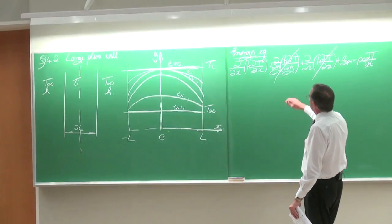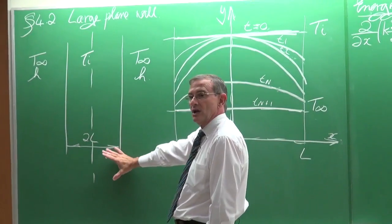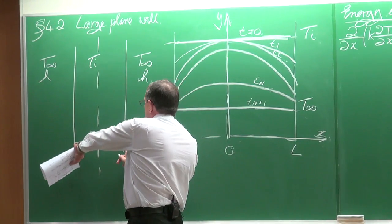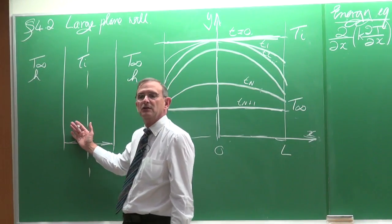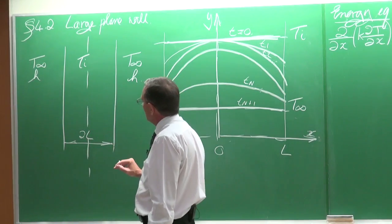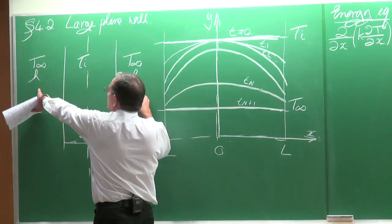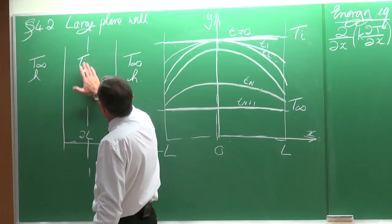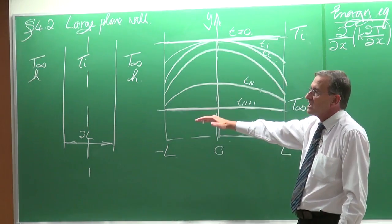What is the methodology used to solve the temperature distribution in a large plane wall? The large plane wall has a symmetrical boundary condition and is always given as 2L. On both sides, we have a heat transfer coefficient and T-infinity, where the temperature at t equals zero is equal to Ti.